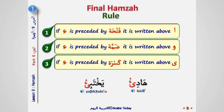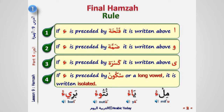Examples: Haadi'u, Yahtab'u. If Hamza is preceded by Sukun or a long vowel, it is written isolated. Examples: Milc'u, Ya'a, Niat'u'a, Barit'u.